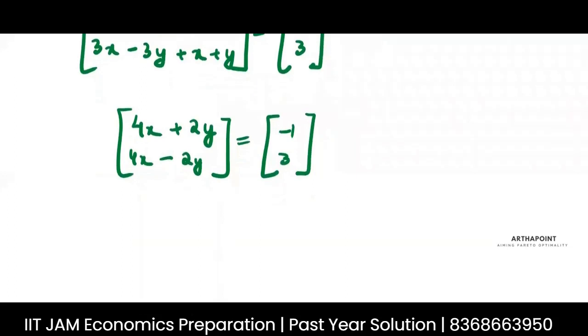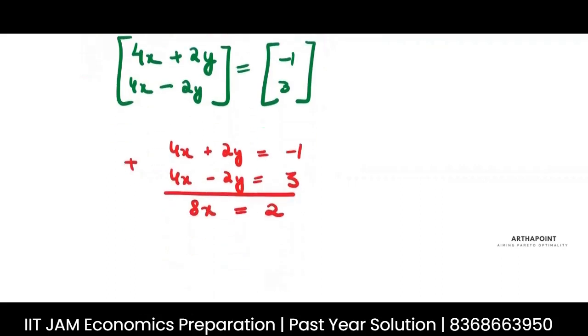Two equations, two variables, solve it. So 4X plus 2Y is minus 1. 4X minus 2Y is 3. Add the two equations together. 8X will be 2. So X will be 1 by 4.